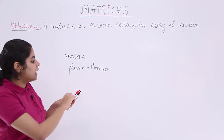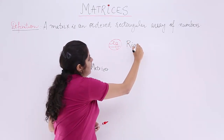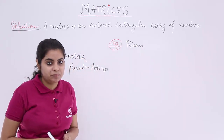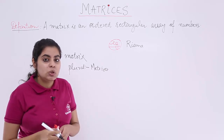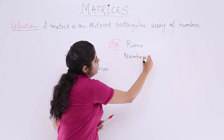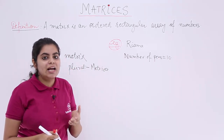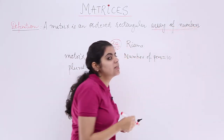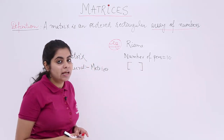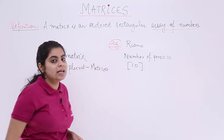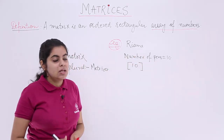For example, I have a girl named Raima who has some stationery articles with her. Raima has 10 pens. Now I need to show this information — the number of pens with Raima. I can either write 'number of pens = 10,' but if I want to write it in an array of numbers, I just place the number in a big bracket. If I write 10 here, that means it is an array or matrix representing the number of pens with Raima — so I can write 'pens' here.